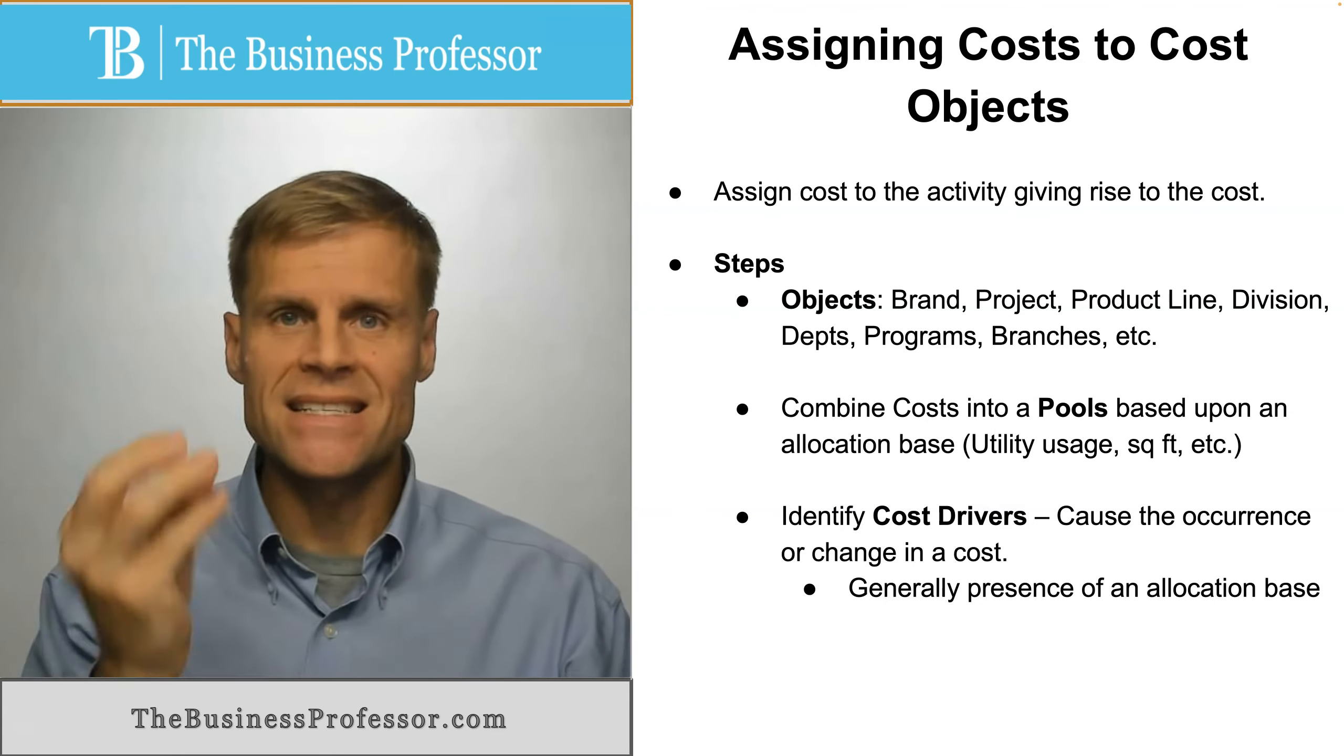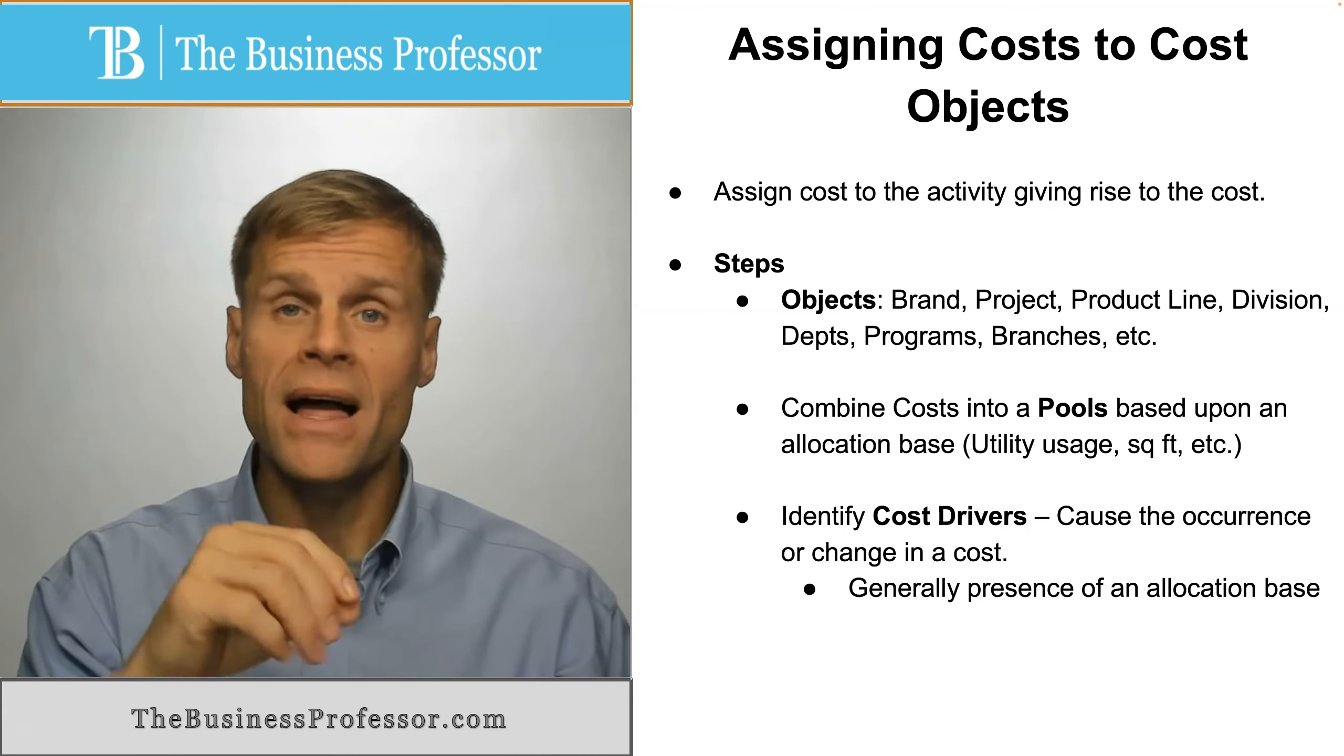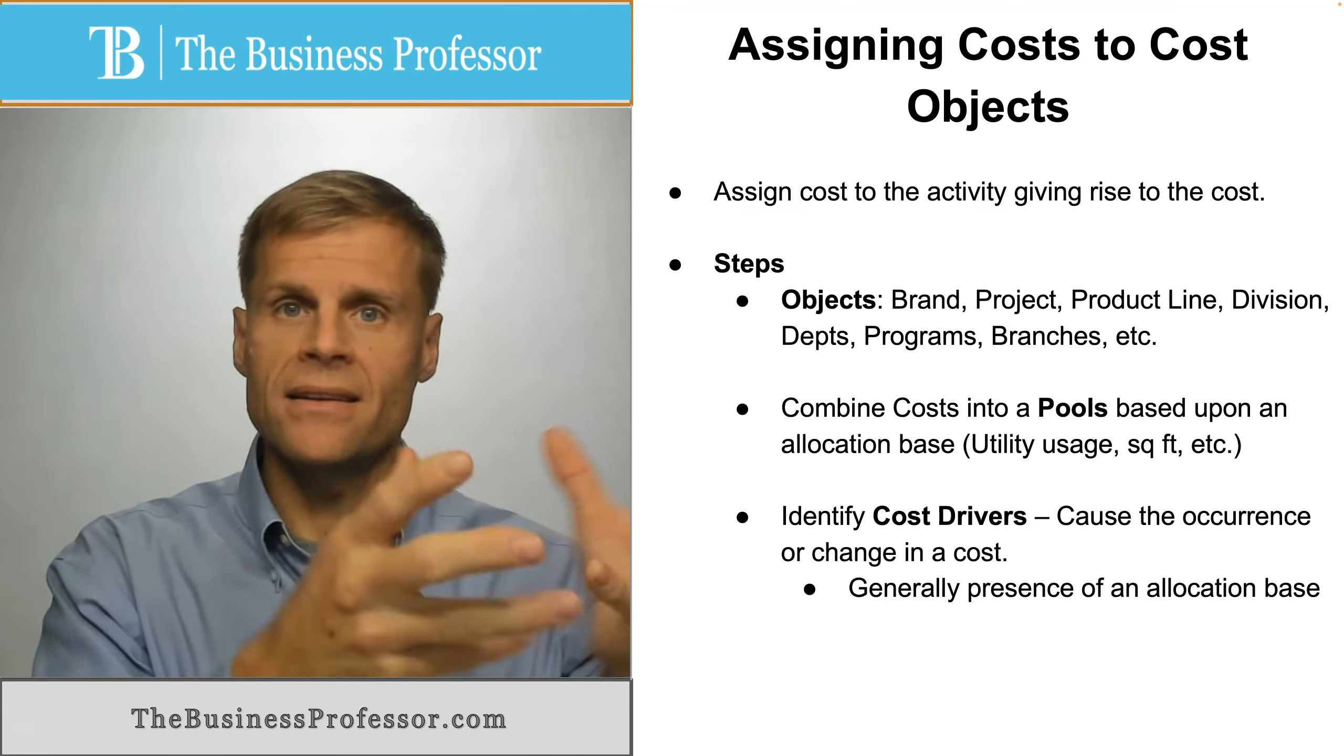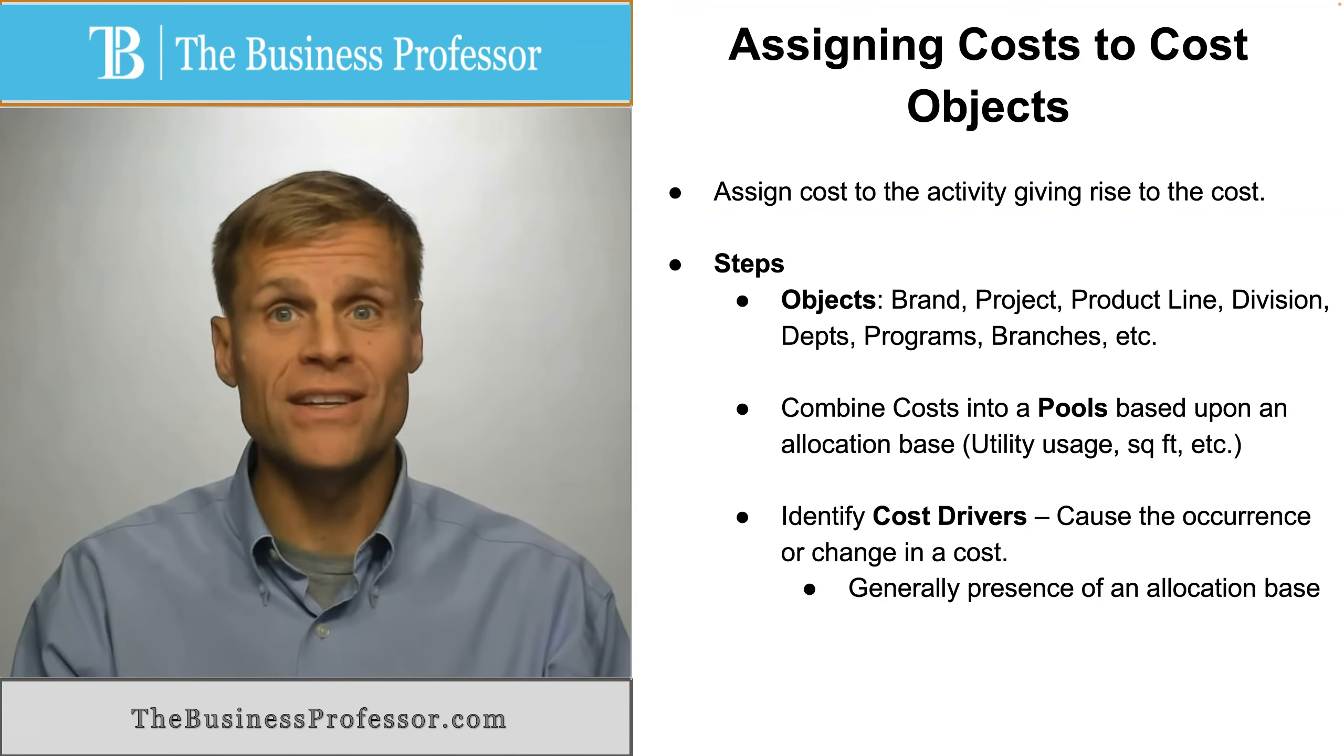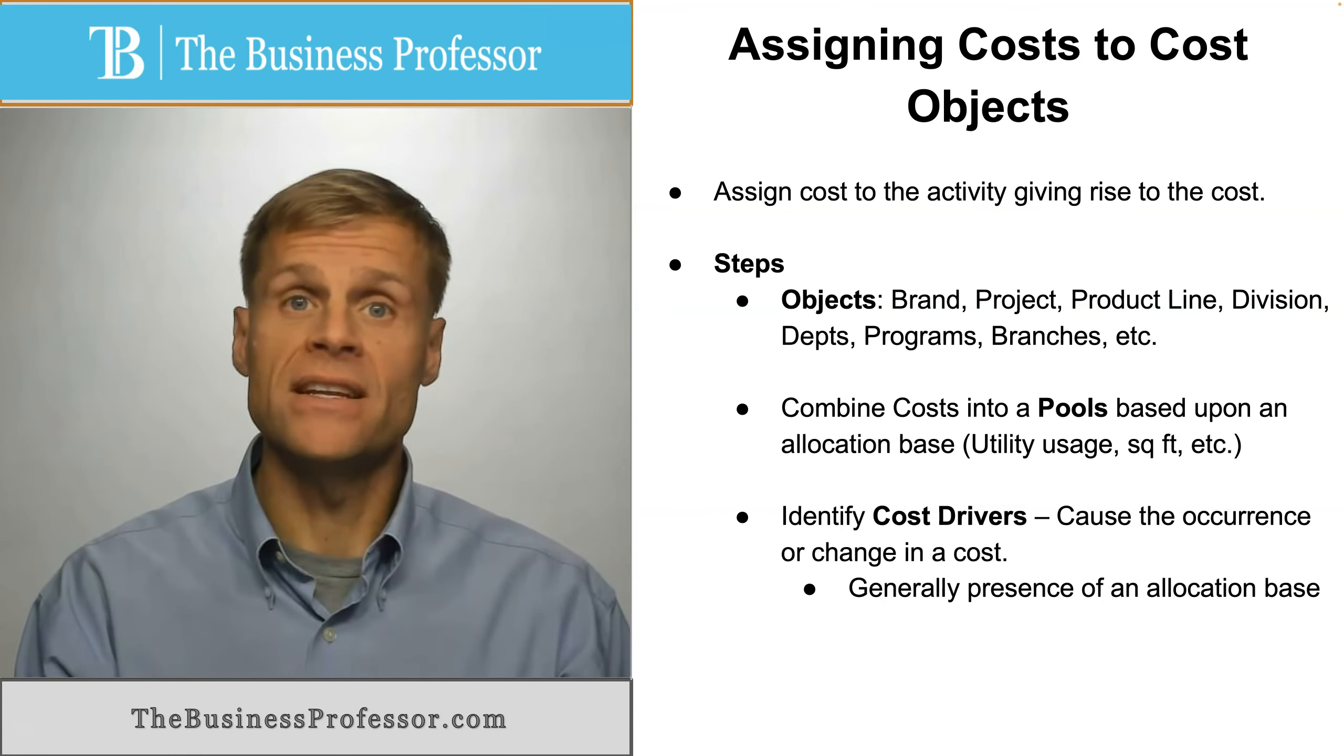So their presence is an indication that you need to use this allocation base and multiply it by every unit of that cost driver that you have present, and that's how you again assign these collective pools of cost in the appropriate percentage to the activity or to the object where these activities occur, these cost drivers occur.